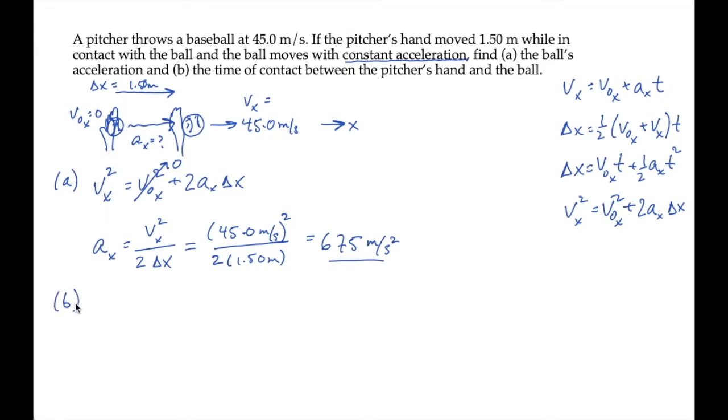Part B asks us for the time of contact between the pitcher's hand and the ball. So now we're looking for t. We're going to find a kinematic equation that has time as the only unknown. Looking at the first one, I know v_x, v_0x, and now I know a_x because I just calculated it. So I can solve for time t. Let's look at the next one. I know these values, so I could solve for time t. That one would also work. For the third one, v_0x is zero so that term disappears, and I know the acceleration, so I'm looking for the time. We could use equation one, two, or three. Time doesn't show up in the fourth one. So you can use any of these equations you want. Let me use two of them.